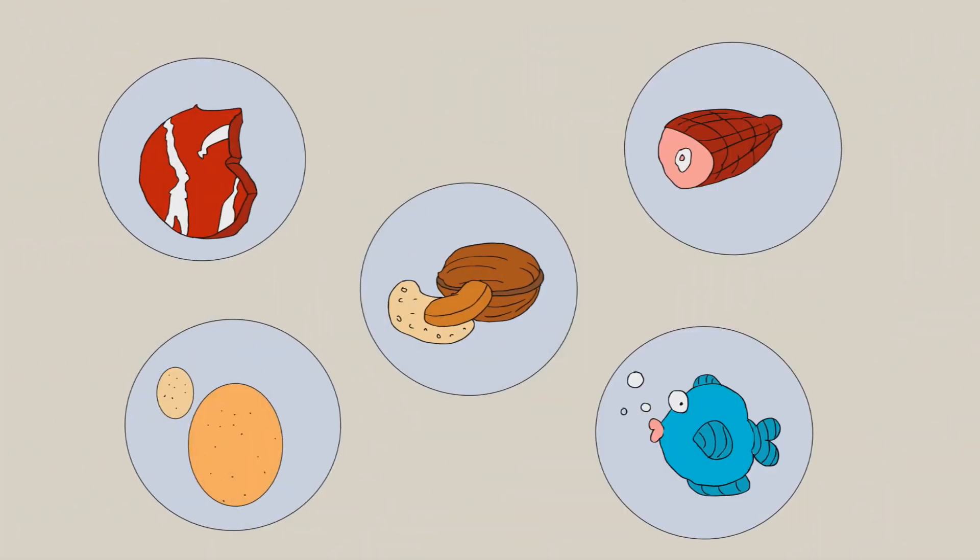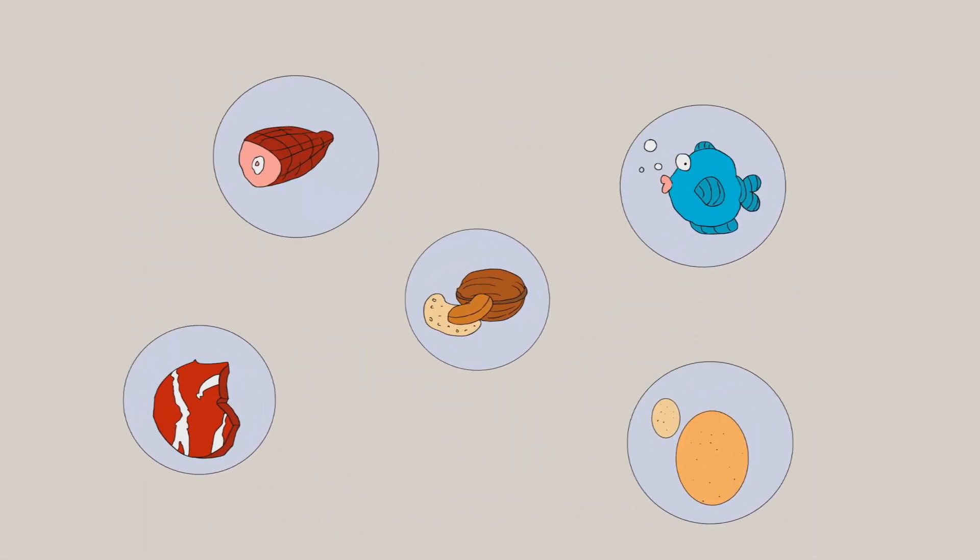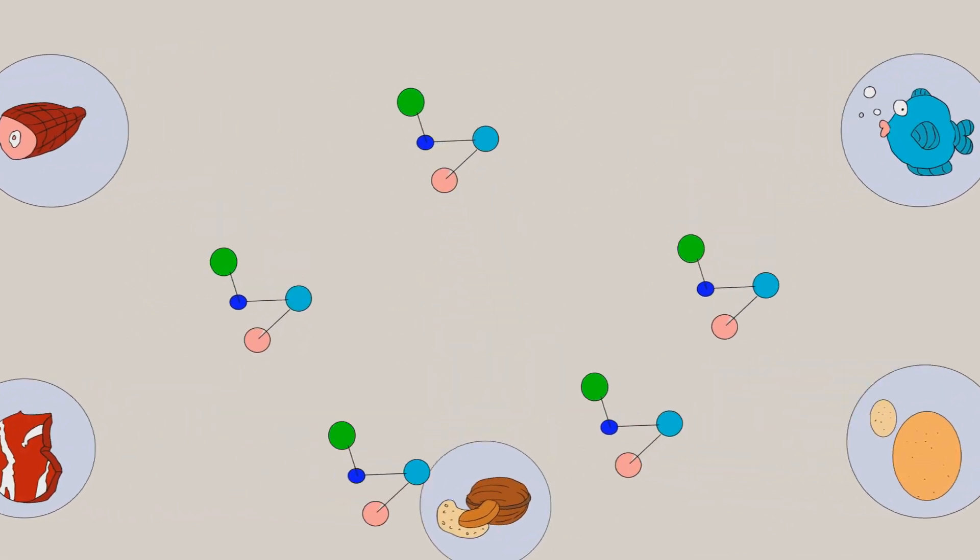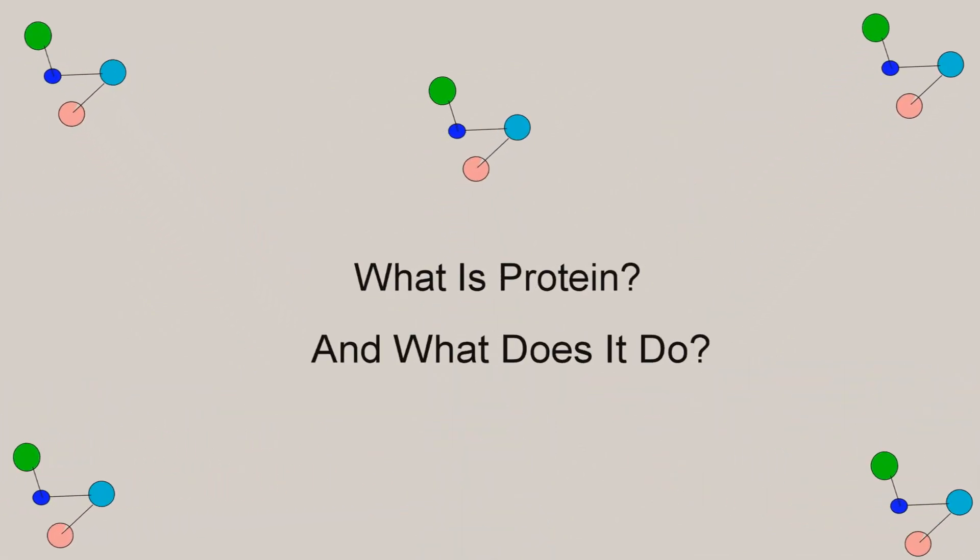Steak, eggs, nuts, ham, and fish. They're all great sources of protein, but what does that mean? What is protein, and what does it do?